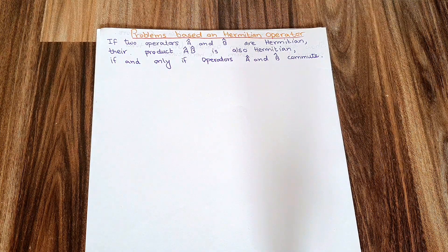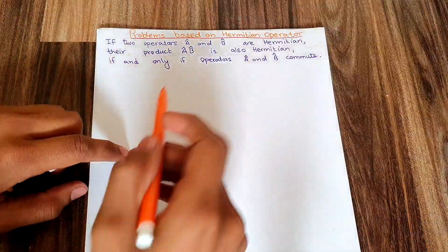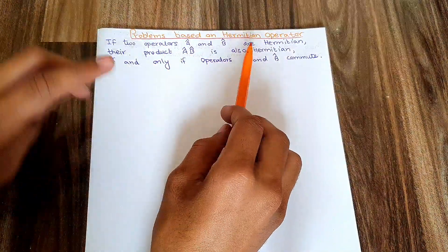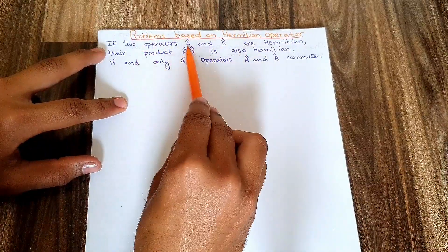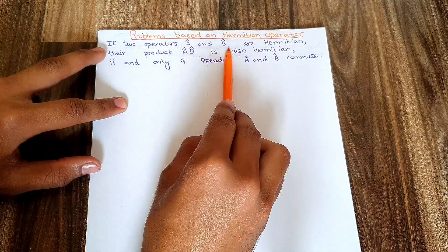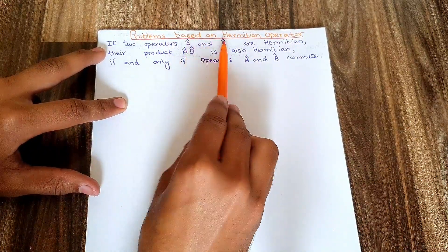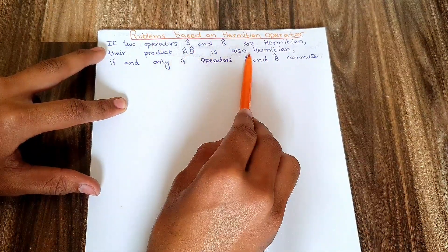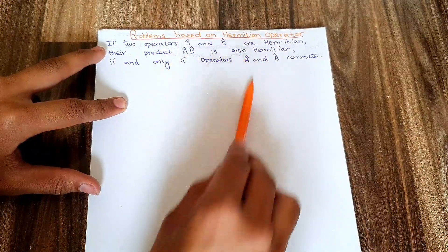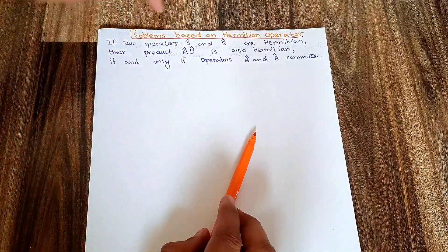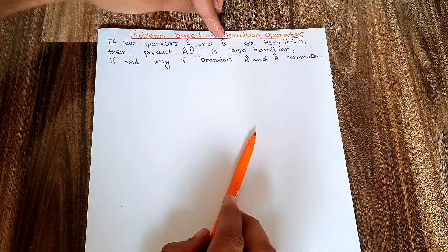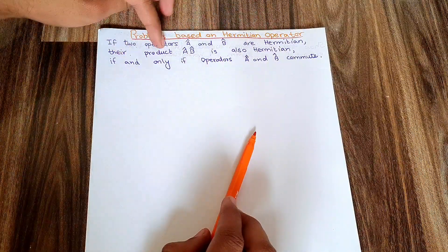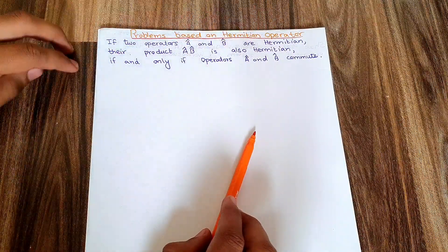Hello everyone. Today in this video I am going to describe another problem based on Hermitian operators. First of all, consider two operators A and B. If these two operators A and B are Hermitian, then their product AB should also be Hermitian.